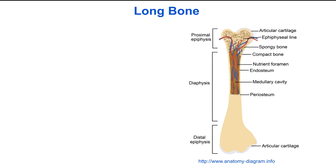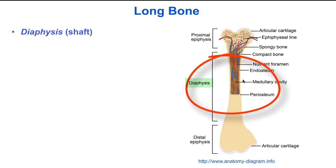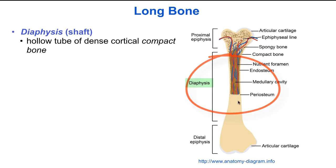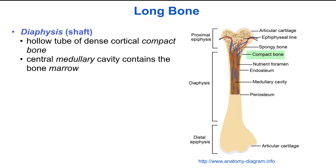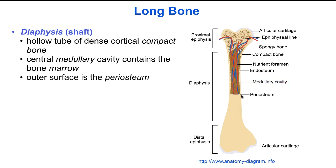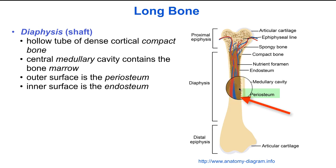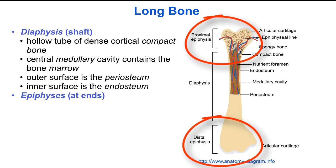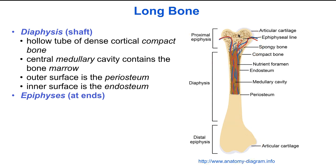Here is a typical long bone showing some of the major features. The diaphysis or shaft is the central region of the bone — a hollow tube of dense cortical compact bone. The central medullary cavity contains the bone marrow. The outer surface is the periosteum and the inner surface is the endosteum. The expansions at the ends are called the metaphyses, and the ends of the expansions are called the epiphyses.